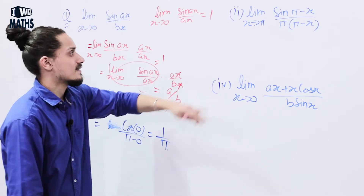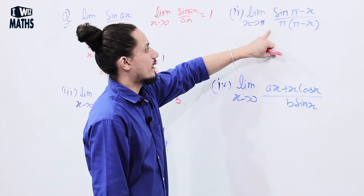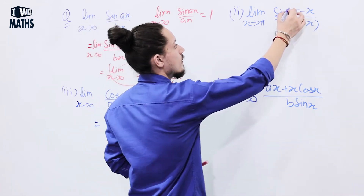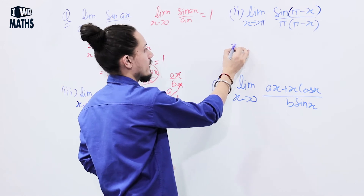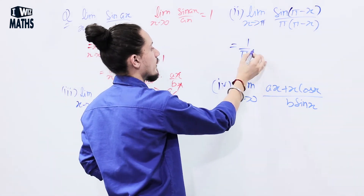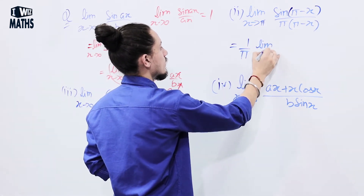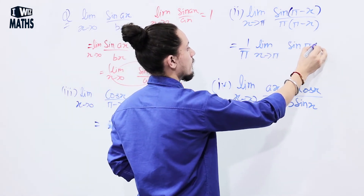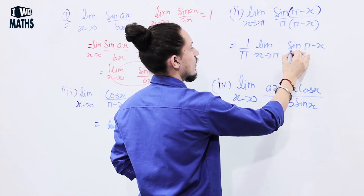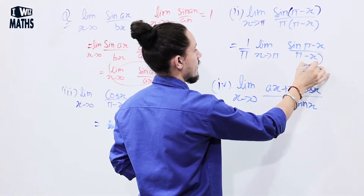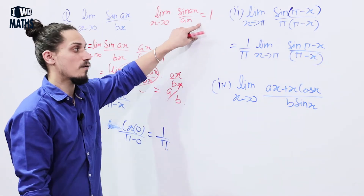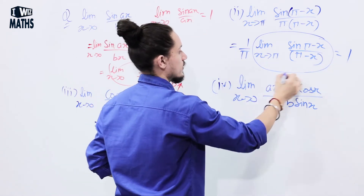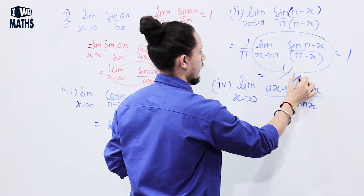Next: lim (x → π) of sin(π - x) / (π(π - x)). I can write this as (1/π) × lim (x → π) of sin(π - x) / (π - x). This is in the form sin(θ)/θ, so this whole term equals 1. The final answer is 1/π.